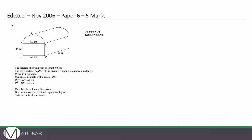Here's our next question, taken from the Edexcel November 2006 paper, paper number 6, worth 5 marks. The diagram shows a prism of length 90. The cross-section is a semicircle above a rectangle. RST is a semicircle with a diameter of RT. Calculate the volume of the prism. The volume of a prism equals the area of cross-section multiplied by the length. We need to work out the area of this shape, which is basically a rectangle and a semicircle.